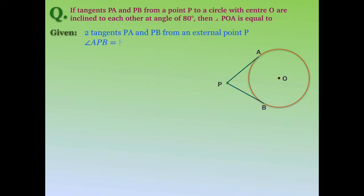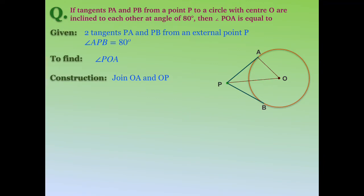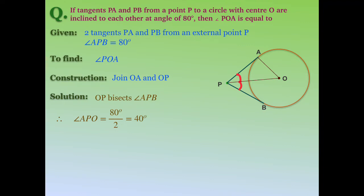We are given two tangents PA and PB from external point P, with angle APB equal to 80 degrees, and we need to find angle POA. We join OA and OP. From the previous theorem, OP bisects angle APB, so angle APO is half of 80 degrees, which equals 40 degrees.